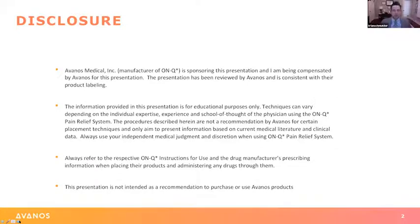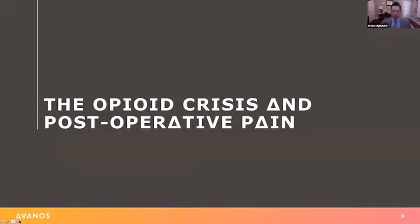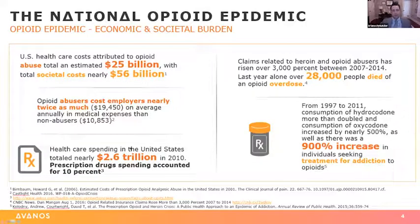On disclosures, I'm speaking on behalf of Avanos Medical, the manufacturer of OnCue. When I start giving talks, I like to talk about the opioid crisis. When I first began giving talks about 10 or 12 years ago, most people laughed it off. But currently it's pretty obvious that we're in the midst of a pretty bad opioid epidemic here in the United States. That epidemic is costly — U.S. healthcare costs attributed to opioid abuse are quite large, $25 billion, with societal costs as high as $56 billion.